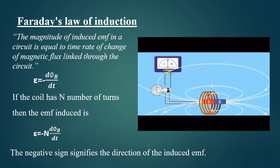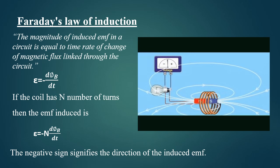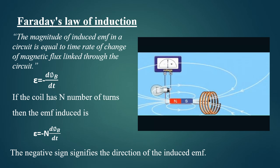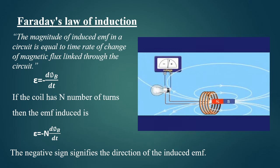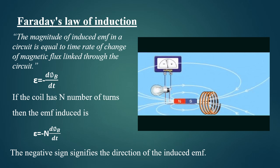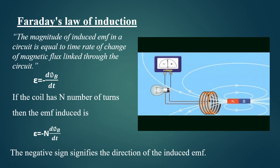In this case, epsilon is equal to negative d phi by d t, where phi represents the magnetic flux.